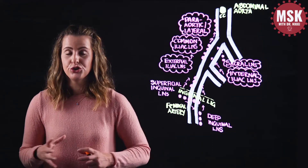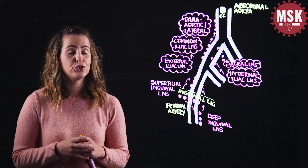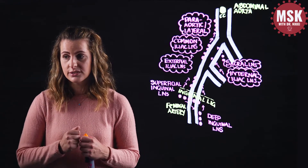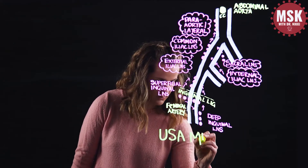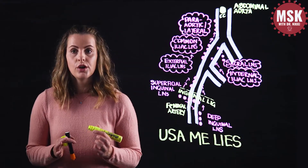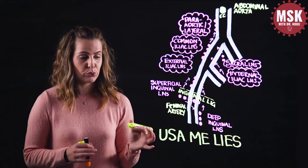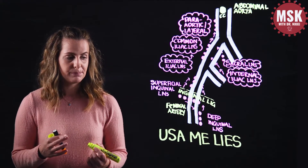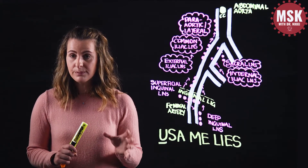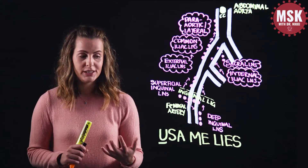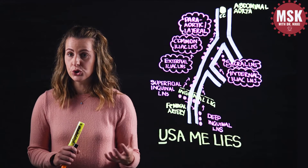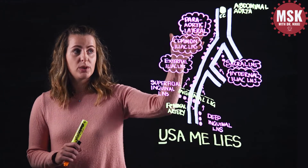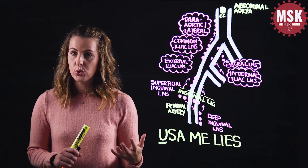A mnemonic to remember specifically the lymphatic drainage of the uterus is 'USA me lies,' which is the abbreviation to remember the upper, middle, and lower drainage of the uterus. For the upper aspects of the uterus, 'S' represents the superficial inguinal nodes, and 'A' represents the important lymph node group associated with the aorta — that is, the para-aortic nodes.